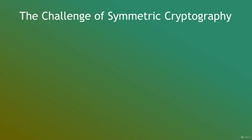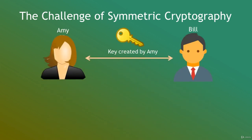If the two parties cannot establish a secure initial key exchange, they cannot communicate securely without the risk of the key being compromised. For example, Amy and Bill are wanting to communicate with each other. They want to make sure that their communication is confidential and that they are in fact communicating with each other — in other words, that the other person is authenticated. When Amy randomly selects her secret key, she has to somehow send it to Bill. But she doesn't yet have a secure channel to communicate with Bill, so she can't encrypt the key.